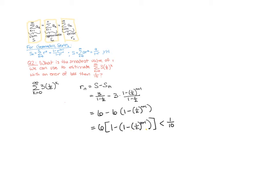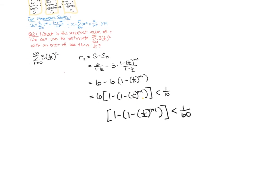Let's first move the sixth to the other side. We have one minus the quantity one minus the quantity one half to the n plus one is less than one over 60. Then we can combine these two ones, so we're just really left with one half to the n plus one on this side needing to be less than one over 60.